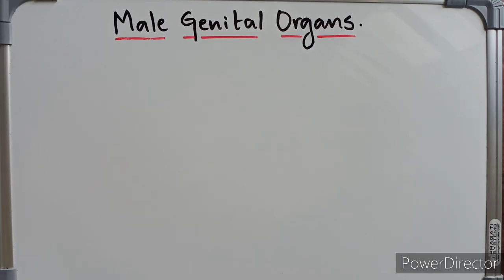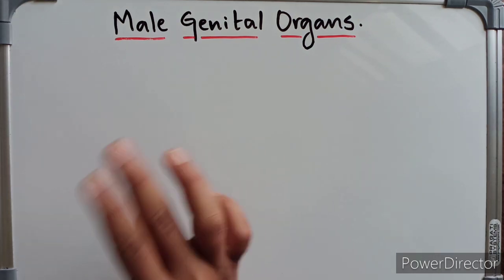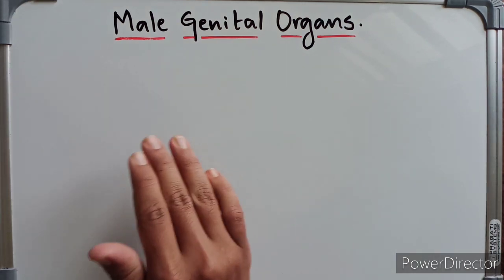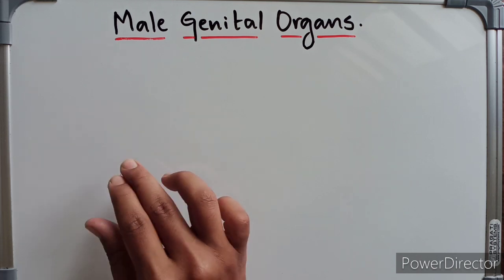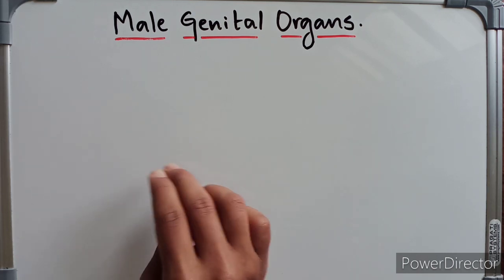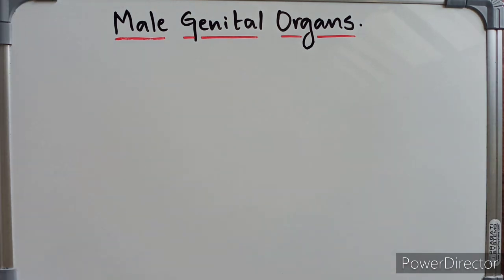Hello guys, welcome to Matten. In this video we are going to look at the anatomy and the arterial supply, venous drainage, lymphatic drainage, and the nerve supply of the penis. Make sure to subscribe and also watch our anatomy videos on the main genital organs and other anatomy videos. Now coming to the arterial supply of the penis.